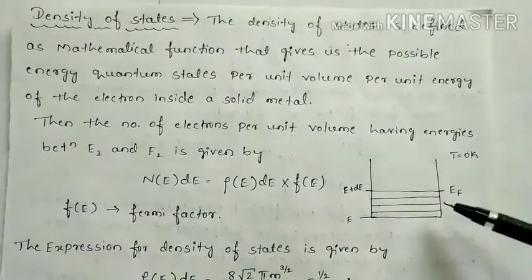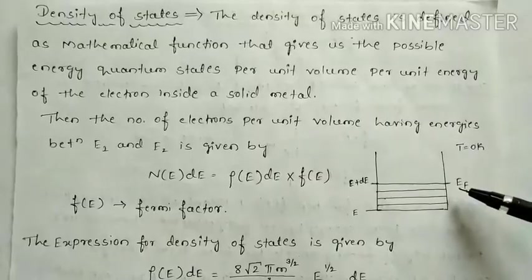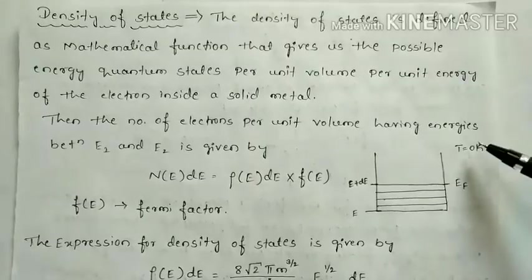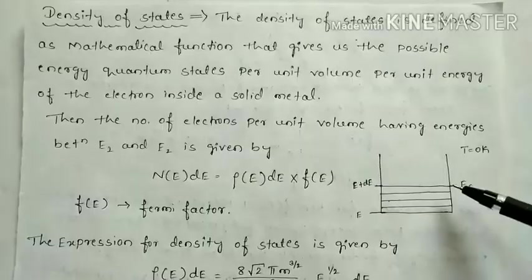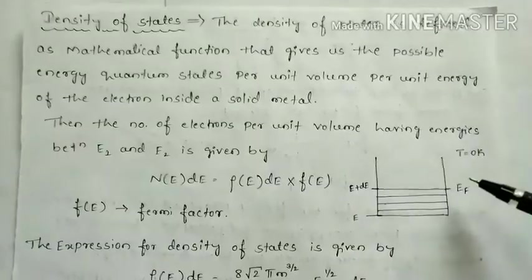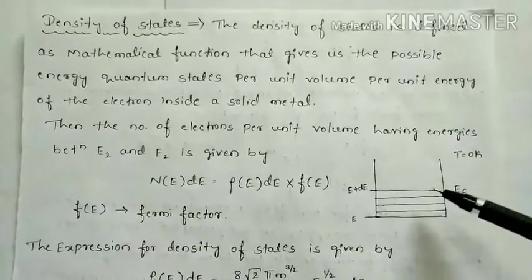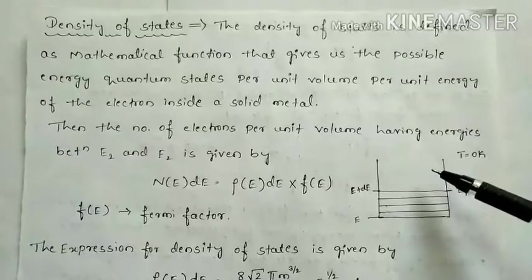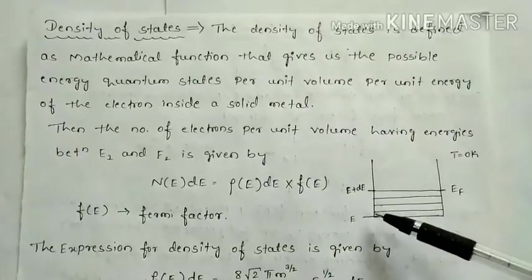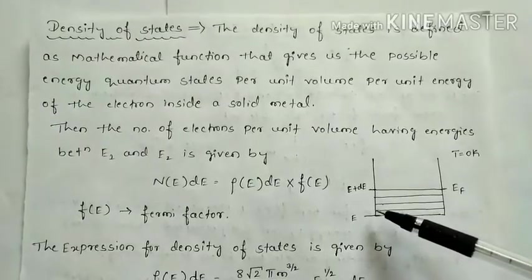Now in the figure you can see, this is the energy level diagram. This is the Fermi level. The energy range is between E and E plus dE at 0 Kelvin. The Fermi energy or Fermi level is the topmost collection of electrons at 0 Kelvin, and the corresponding energy is called Fermi energy. Below this Fermi energy all the energy levels are filled, and above this Fermi energy all the energy levels are vacant. The density of states is the density of states between this energy level and this energy level.